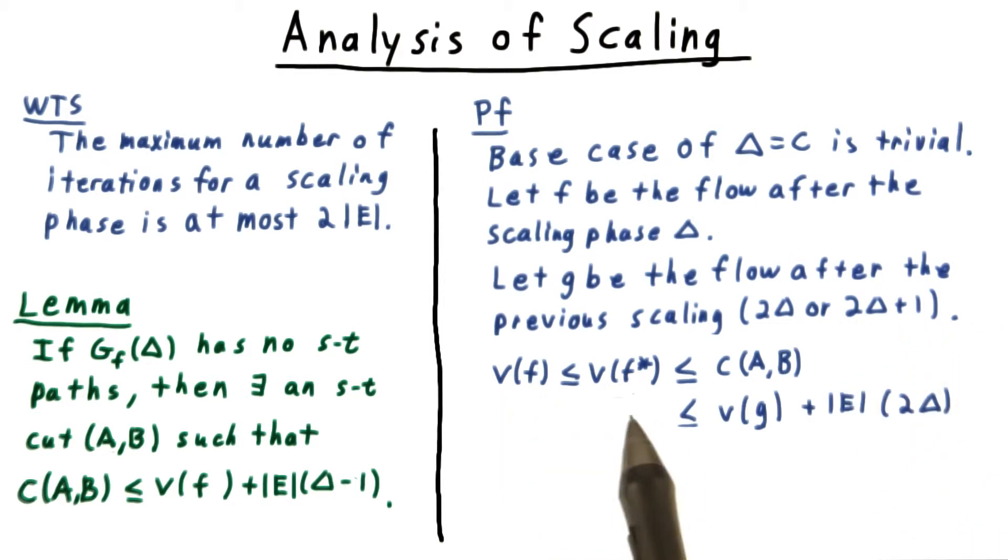The value of the flow f is at most the maximum flow, but this is at most the capacity of the ST cut induced by the flow g in the previous iteration where the threshold was 2 delta. Our lemma then says that this is at most the flow of g plus the number of edges times 2 delta.